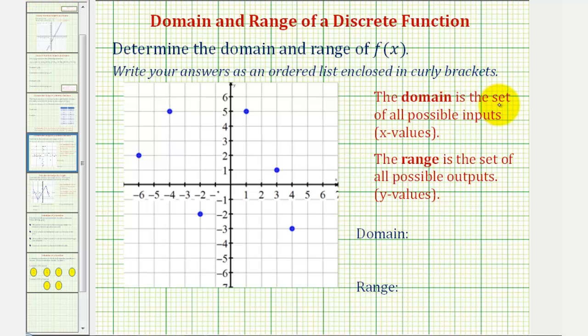The domain of a function is a set of all possible inputs, or x-values, and the range is a set of all possible outputs, or function values, or y-values.